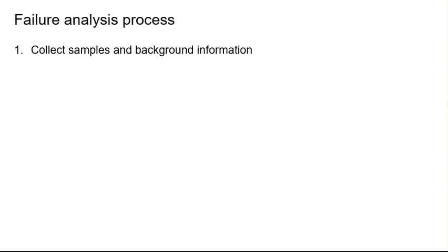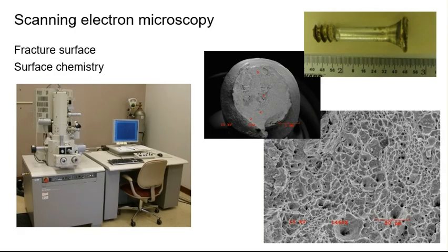The failure analysis process is straightforward. First, collect the samples and background information. Next, perform the analyses, which has three steps. The first step is to evaluate the samples. There are several commonly used metallurgical analysis techniques. A scanning electron microscope is used to examine a sample surface for features related to fractures and for analysis of the elemental surface chemistry for corrosion. It's also used for other purposes.